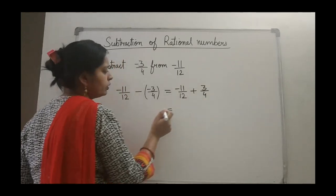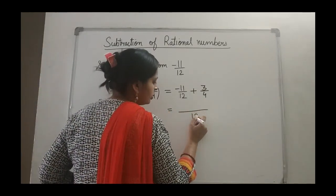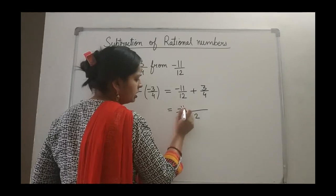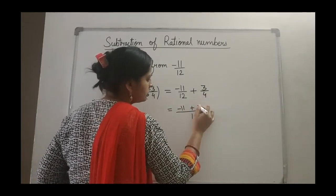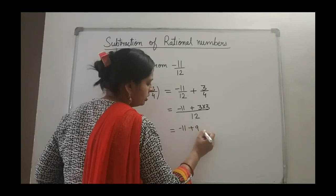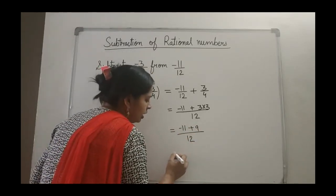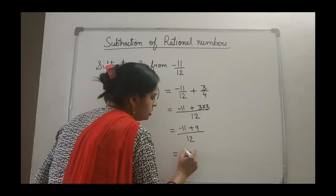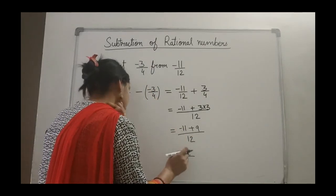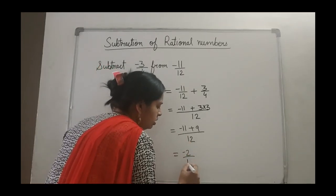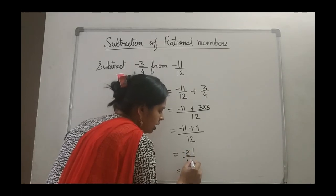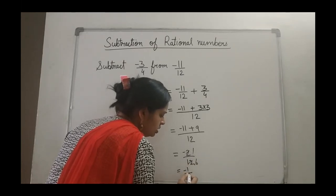The LCM for 12 and 4 is 12. So 12 remains as is; minus 11 stays, nothing to multiply there. And 4 threes are 12, so 3 into 3 gives 9. So we get minus 11 plus 9 upon 12. Minus 11 plus 9 is minus 2 — because 11 is greater, following the rules of integers. So we have minus 2 upon 12. Both can be divided by 2, so the lowest term gives minus 1 upon 6 as your answer.